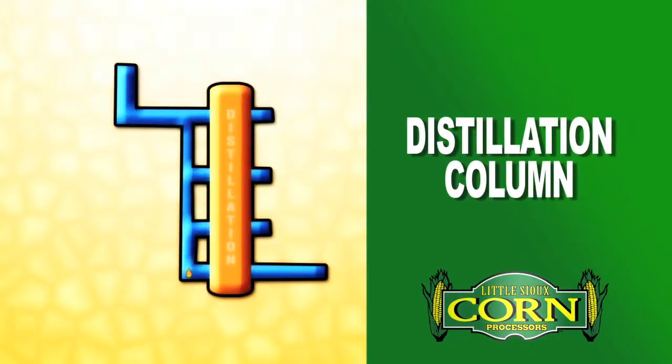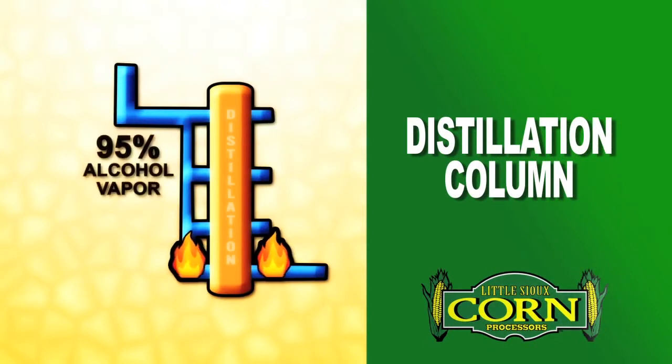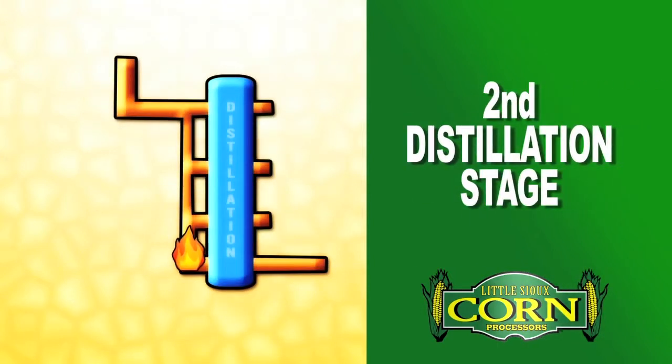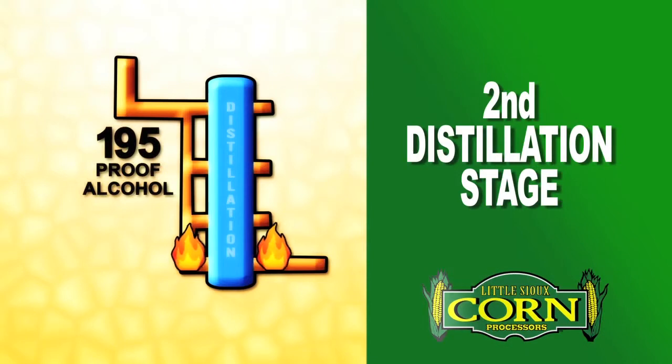Beer is pumped from the beer well to the distillation column where heat is added. The alcohol exits the column at 95 percent alcohol vapor. It moves into a second distillation stage and further distills to 195 proof alcohol.